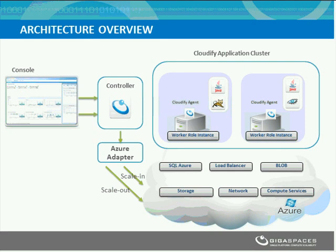Once we've gone through the initial step, we end up with the Cloudify controller, which is basically a REST service acting as a gateway to the entire GigaSpaces Cloudify environment on Azure. This is how we monitor and deploy the application — using that endpoint as the gateway to the Azure environment. The controller has an adapter that interacts with the underlying Azure environment, including instantiating new machines and scaling them in or out according to the SLA. This also gives us access to other Azure services like the load balancer and blob storage.